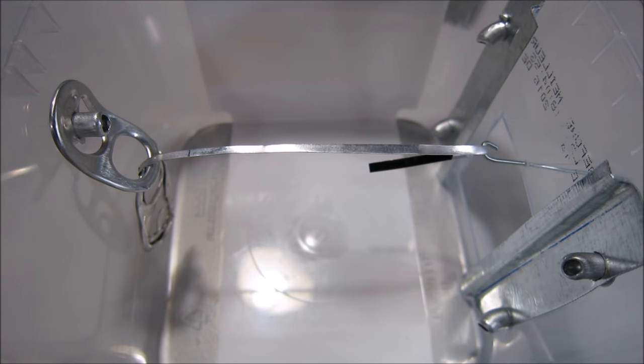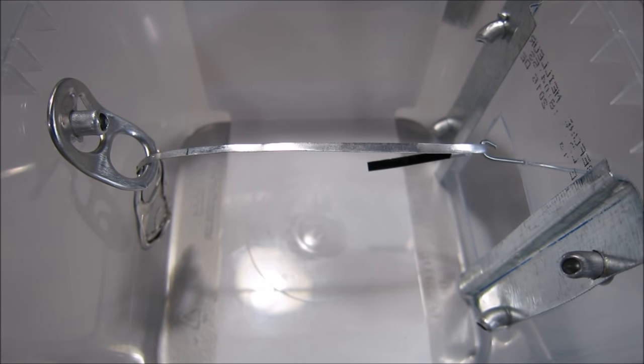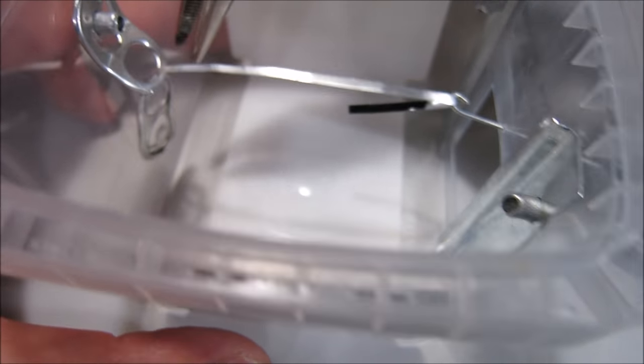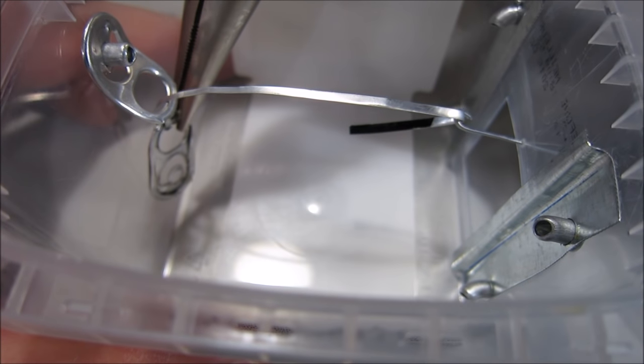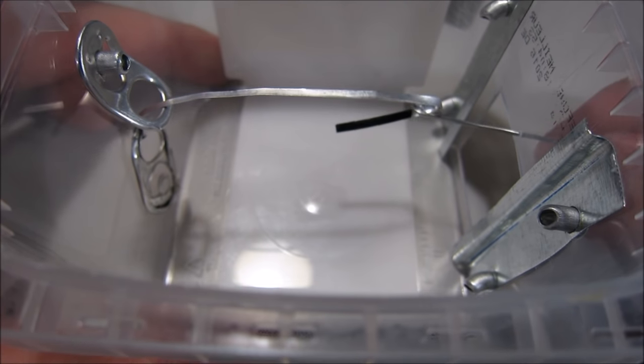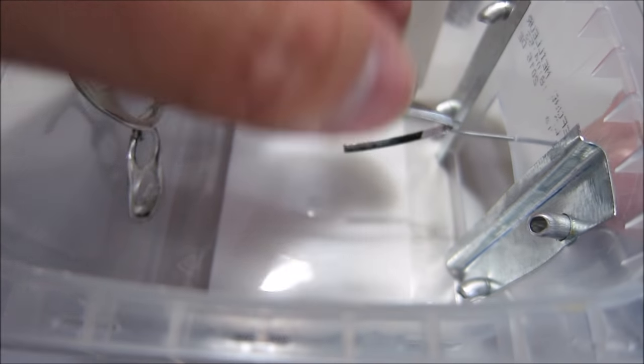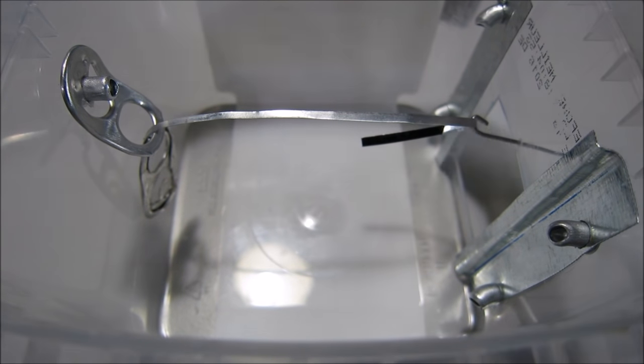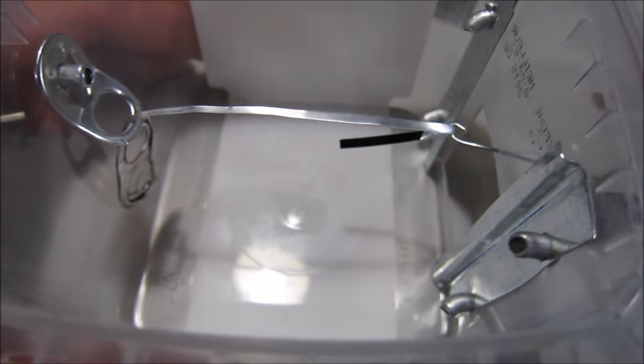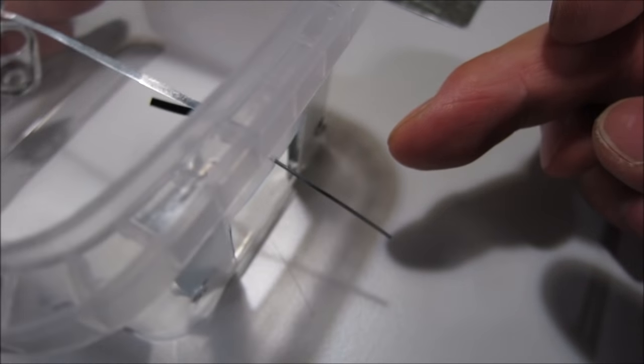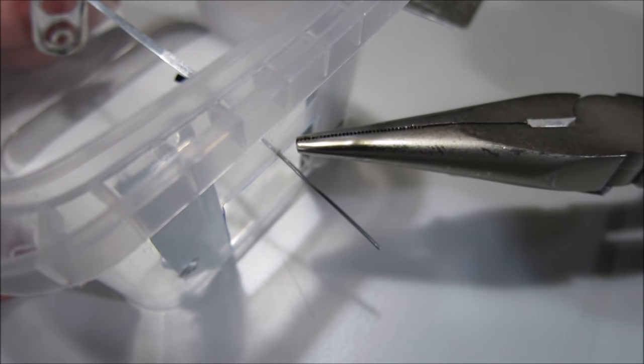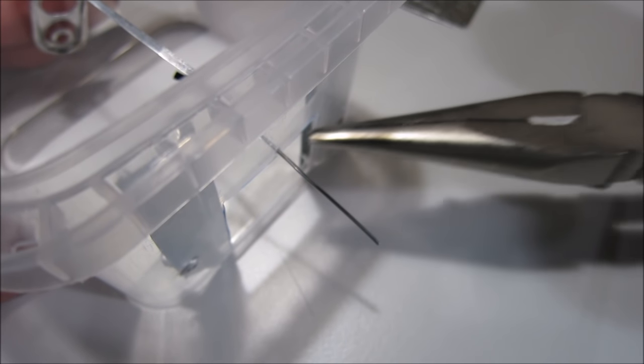Now this is the tricky part where you have to figure out how much play you have there, because what the mouse will do is grab this and pull it through. You want to have this set to the point where it's not going to flick out. We've got to glue that down and then cut the wire here so that it's the perfect trigger point right there.